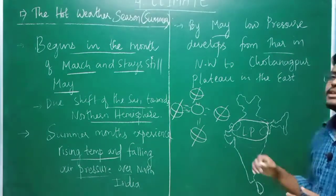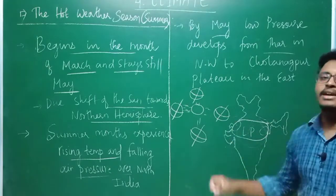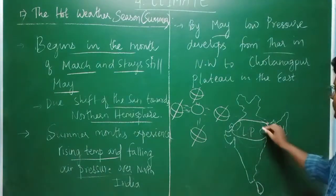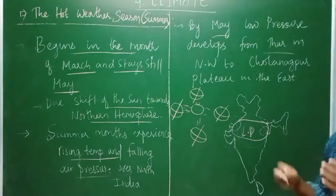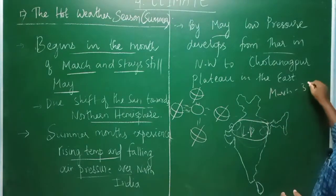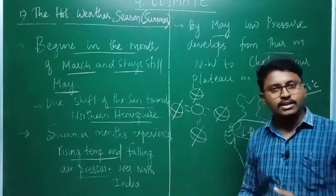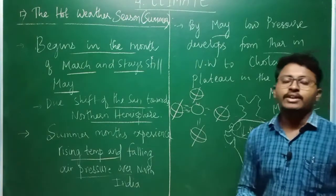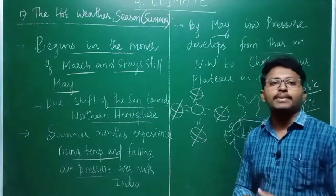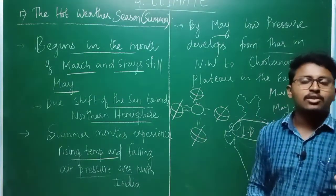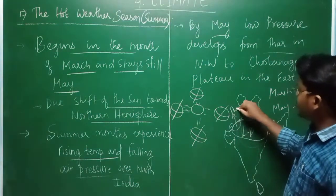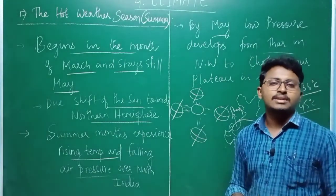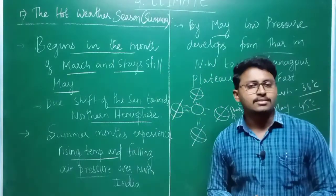Compared to the peninsular region, the north and northwestern part of India experiences more heat during the summer season, and therefore this region completely develops a low pressure area. In the month of March, the temperature may be around 38 degrees Celsius in the north and northwestern parts, but by May the average temperature reaches around 45 degrees Celsius. Because of these higher temperatures, low pressure is created, extending from the Thar desert in the west to the Chotanagpur plateau region in the east.